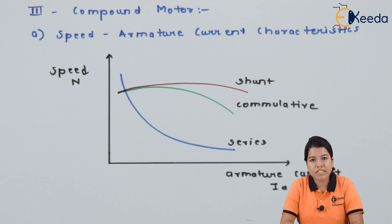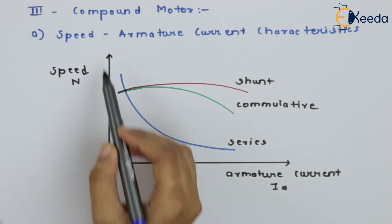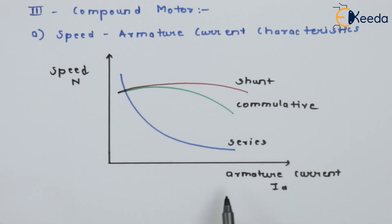The figure shows the first characteristic that is speed vs. armature current. If we see, y-axis represents the speed. Second, x-axis represents the armature current.